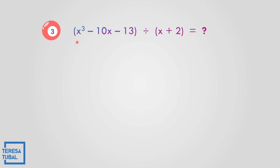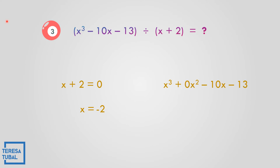For number 3, divide x cubed minus 10x minus 13 by x plus 2. The value of x: x plus 2 equals 0, so x is negative 2. Since there is no x squared term, we write 0x squared, making the polynomial x cubed plus 0x squared minus 10x minus 13. The leading coefficients are 1, 0, negative 10, and negative 13.